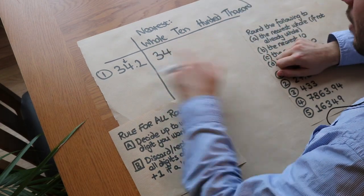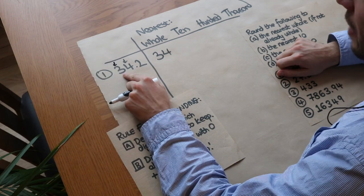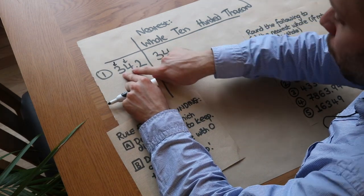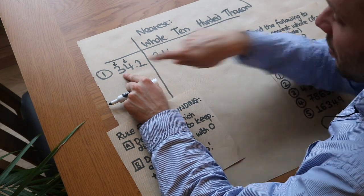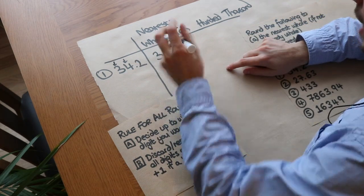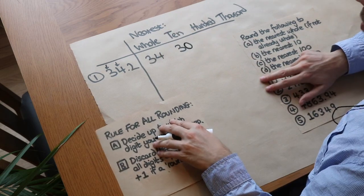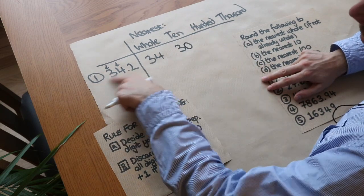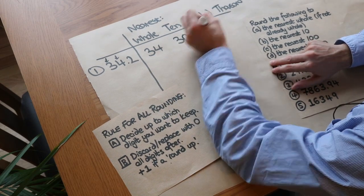Now 34.2 to the nearest ten: we keep everything up to the tens digit - the three - and check the next digit, four. Is it greater than or equal to five? No, so the three stays as it is, and the units digit gets replaced with zero: 30. We don't need to round to the nearest hundred or thousand because 34.2 is less than a hundred.